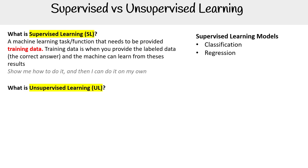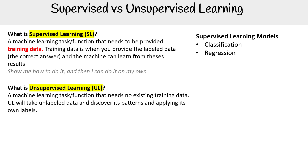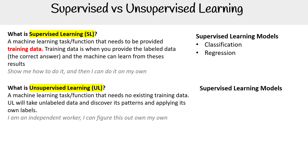What about unsupervised learning? This is a machine learning task or function that needs no existing training data. It will take unlabeled data and discover its patterns, applying its own labels. So it's an independent worker — it can figure this out on its own. For unsupervised learning models, we have clustering, association, and dimensionality reduction.